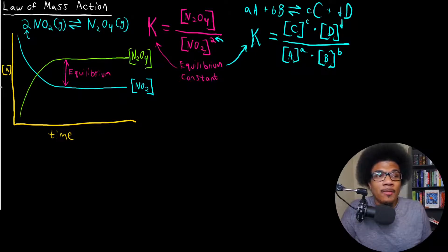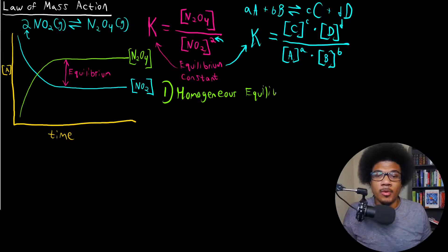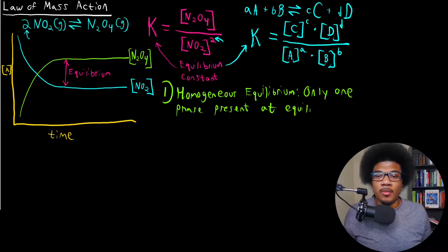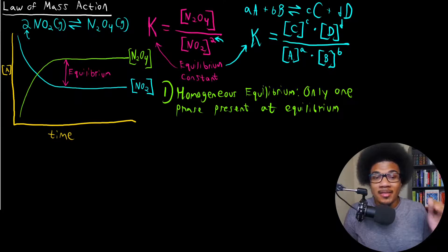Now that we can quantify equilibrium, we want to understand the different equilibrium scenarios. There are two types to be familiar with. The first is homogeneous equilibrium, where there is only one phase present at equilibrium. By phase, I mean the phases of matter. So if you only have gases present at equilibrium, that's a homogeneous equilibrium. If you only have aqueous solutions present at equilibrium, that's also a homogeneous equilibrium.